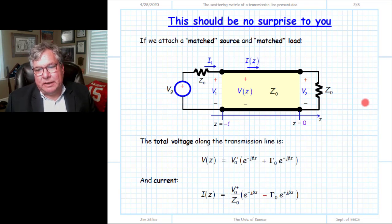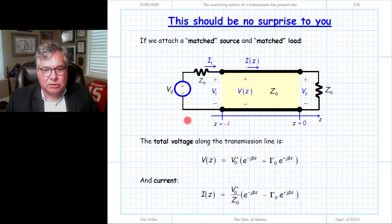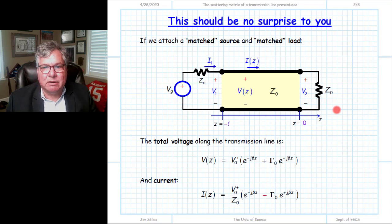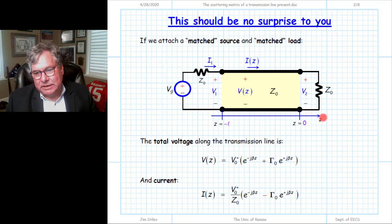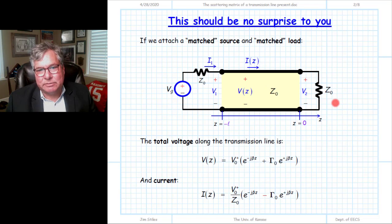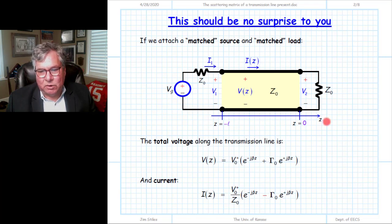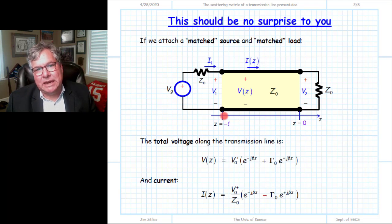To set up our experiment to find S11 and S21, we're going to put a matched load and a matched source on the two ports — a matched source on port 1 and a matched load on port 2. I've drawn an index with Z increasing as we move in this direction. This is the index for the interior transmission line, not for the transmission lines outside the device. I'll define this point as Z equals zero, and therefore this point must be Z equals minus L, since the index has units of distance.